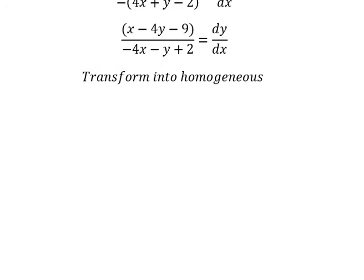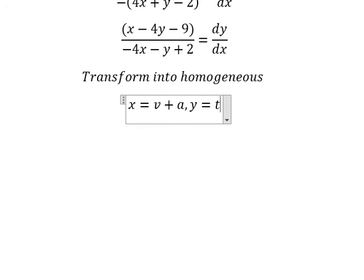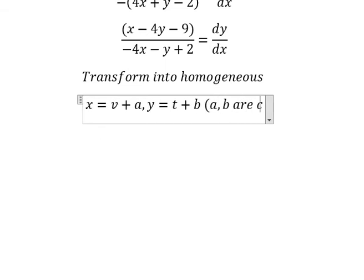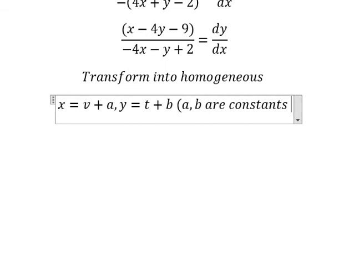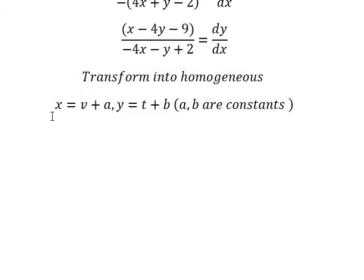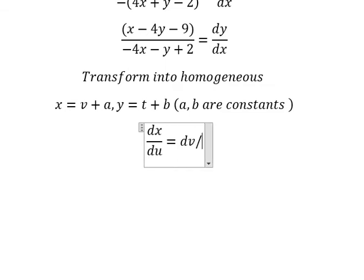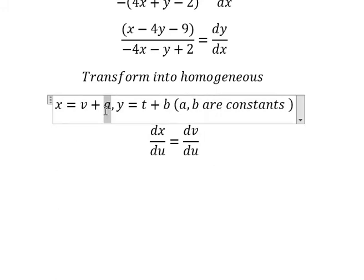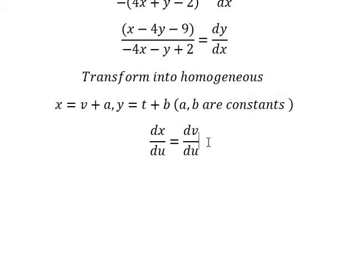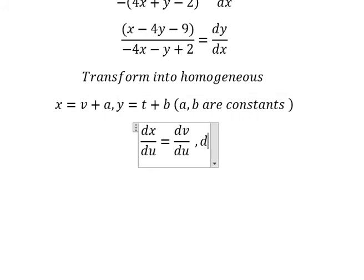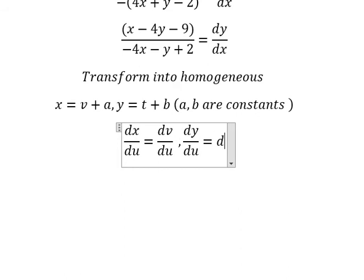So I will put s equal to v plus a and y equal to t plus b. In this situation, a and b are constants. So we need to do the first derivative for both sides, and we have dx over du equals to dv over du. This is about the constant, so you get 0. Similarly for the second one, we have dy over du equals to dt over du.